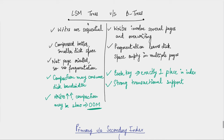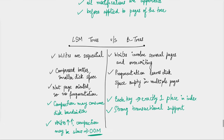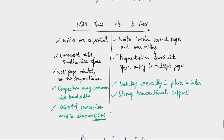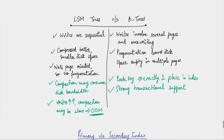In LSM trees, writes were sequential, which is always good for hard disks. In B-trees, it involves writing to several pages and also overwriting — not sequential writes. LSM trees also compress better and use smaller disk space because in B-trees there's fragmentation — pages can be half empty, so you have redundant space between nodes. B-trees tend to take more space. LSM trees have no fragmentation, and compaction algorithms compact segments in the background.